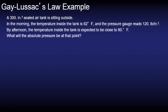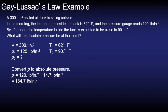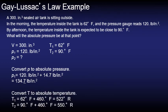Let's look at an example of how we might use Gay-Lussac's law. A 300 inch cubed sealed air tank is sitting outside. In the morning the temperature inside the tank is 62 degrees Fahrenheit and the pressure gauge reads 120 psi. By afternoon the temperature inside the tank is expected to be close to 90 degrees Fahrenheit. What will the absolute pressure be at this point? Here is a quick summary of the information that we know and we need to convert our pressure to absolute pressure and our temperature to absolute temperature.